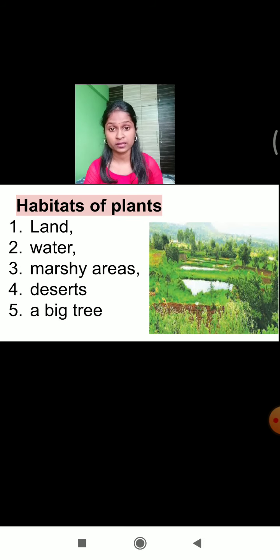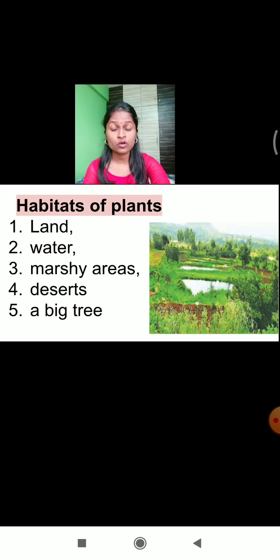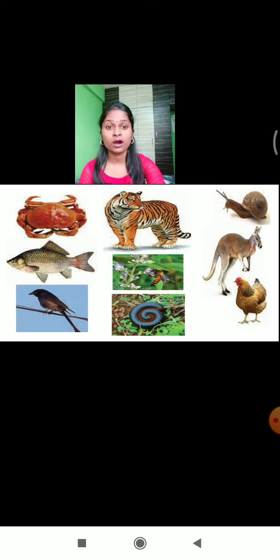We also learnt that plants have different habitats. The place where plants live is called a habitat. There are many habitats of plants — land, water, marshy area, deserts, and big trees. So the classification of plants has been completed. In the same manner, today we are going to learn about the different varieties of animals.